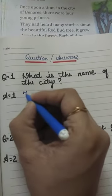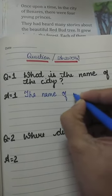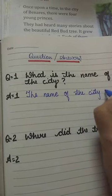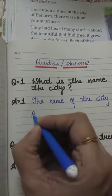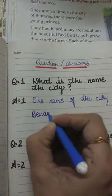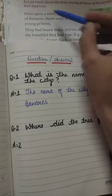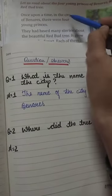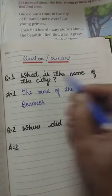So we write the answer: 'The name of the city is Banaras.' The spelling of Banaras is B-E-N-A-R-E-S. So you have seen how we identified the first question and its answer. Our question was 'What is the name of the city?' and the answer was found in the first line: 'Once upon a time in the city of Banaras.' The name of the city is Banaras. So this is our first question complete.